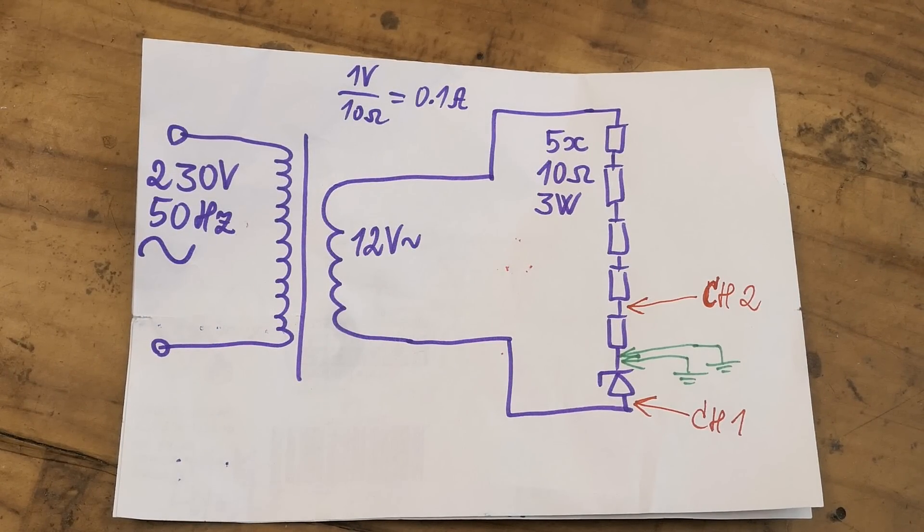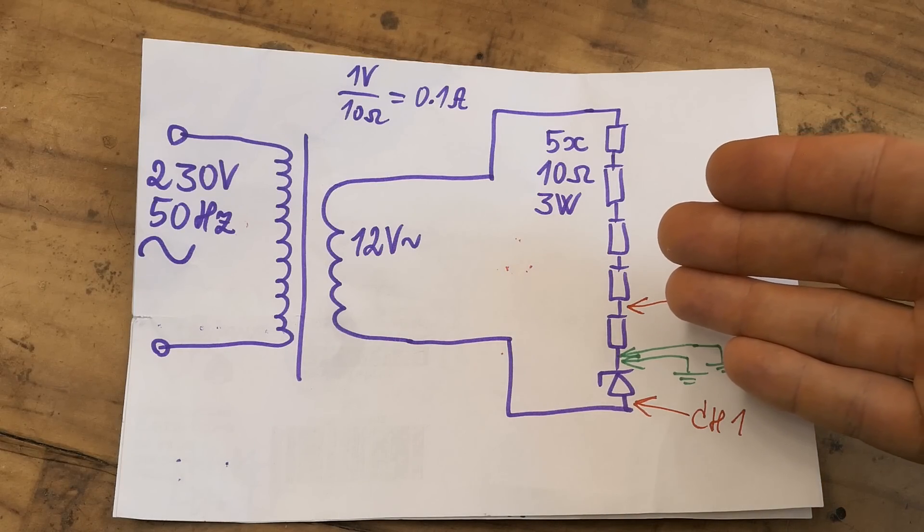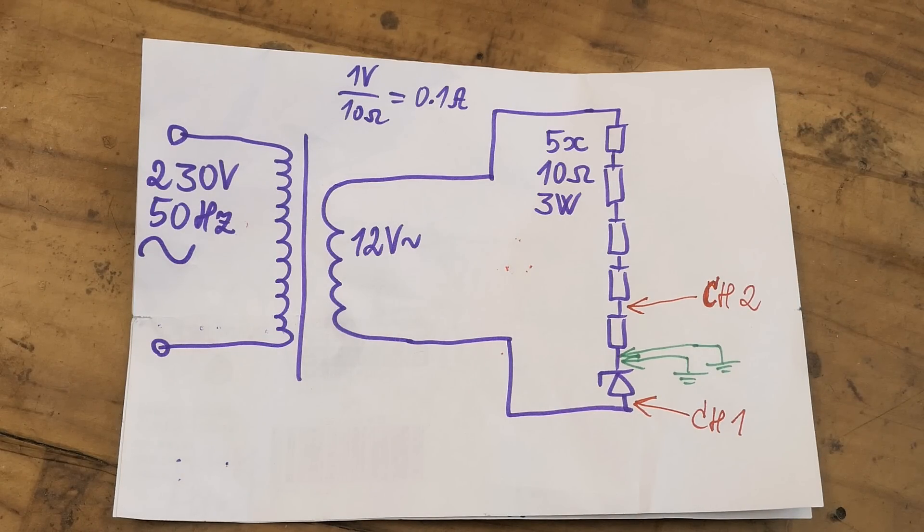A couple videos back I was showing this super simple curve tracer for two terminal components and curve tracing diodes, zener diodes, LEDs, diacs and so on. And I was thinking could this actually work for solar panels?